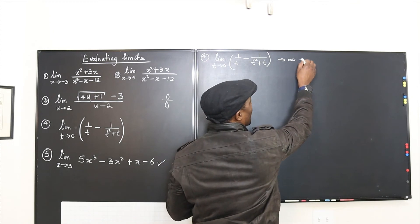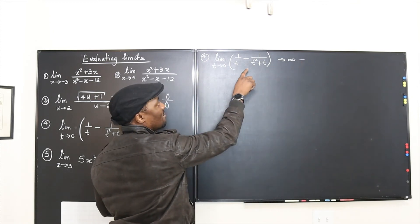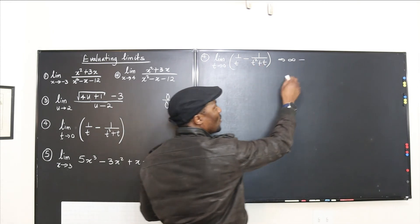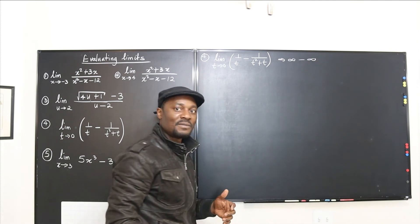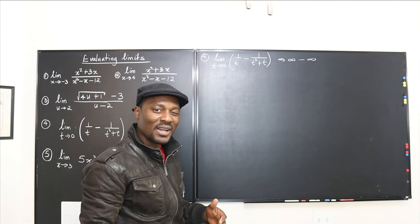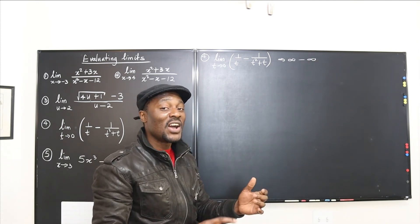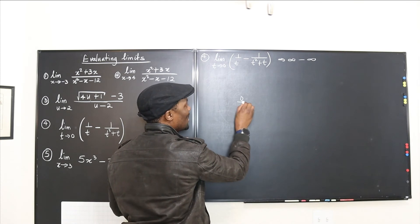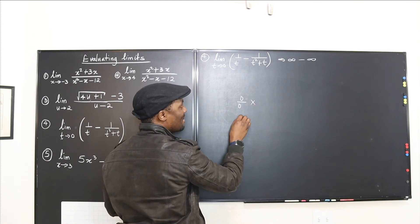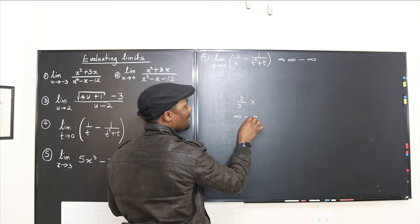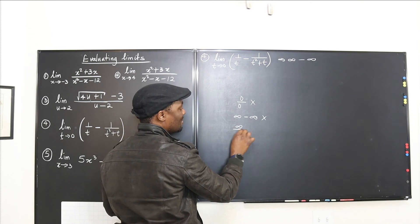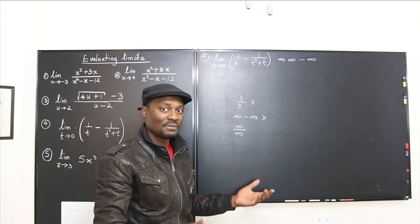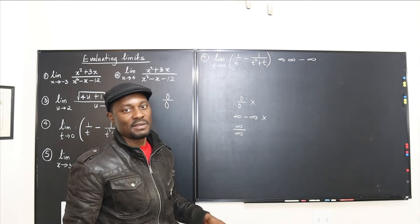So we'd get infinity minus infinity — and that's a problem. You can't have 0 over 0, you can't have infinity minus infinity, and you can't have infinity divided by infinity. These three are indeterminate forms you must avoid when taking limits.